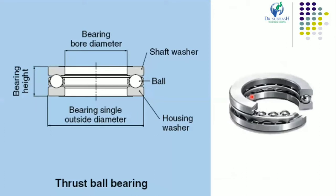Next is the thrust ball bearing. You can see the basic diagram and the actual cut-sectional view of the thrust ball bearing. This shows the bearing diameter, the shaft washer, the housing washer, and the rolling elements which are balls, along with the bearing height. This thrust ball bearing consists of two rows of balls running between two rings — the shaft ring and the housing ring.